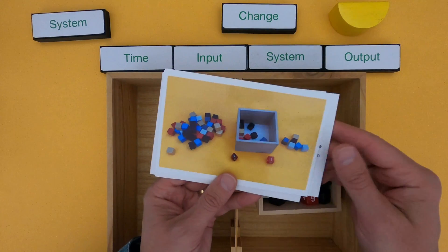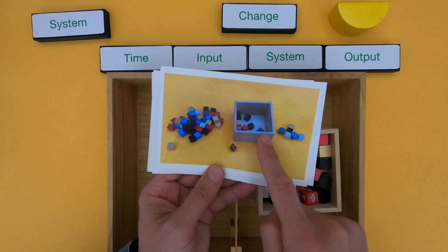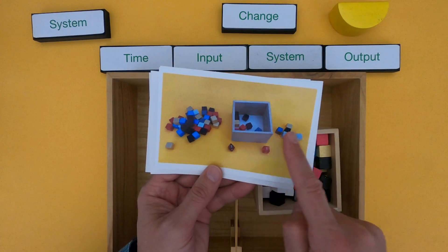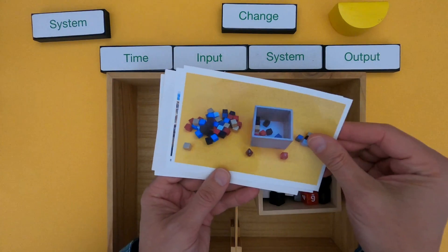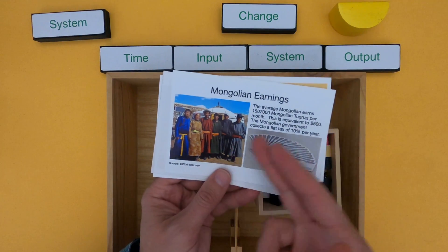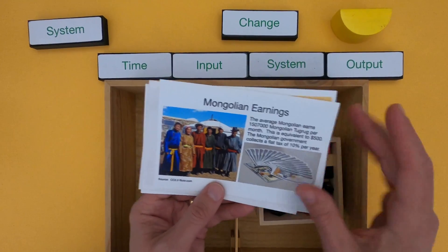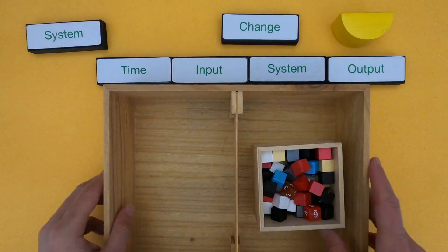I'm going to start by showing you my thinking as we look at objects moving into a wooden box and out again. And then when I'm done with that, you'll have a chance to do the same with Mongolian earnings. So let me clean this up and we'll get started.